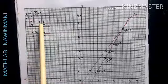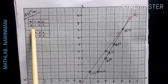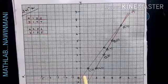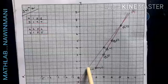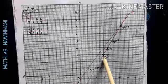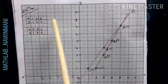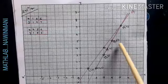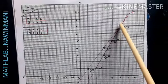So first table's value: 1,1 - x is 1, y is 1, so 1,1 is this point. Second is 3,4: 1, 2, 3, and 1, 2, 3, 4. Third is 5,7: 1, 2, 3, 4, 5, and 7 is 1, 2, 3, 4, 5, 6, 7.